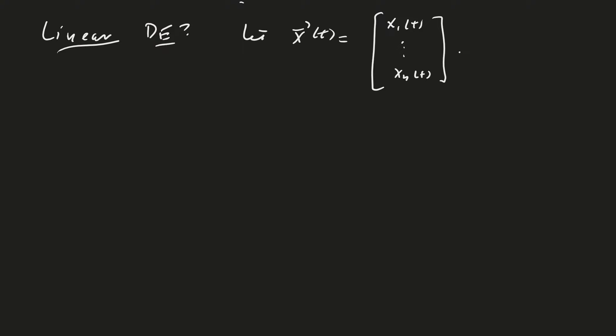Let x of t be equal to a parametric set of vectors. Then the operator acting on this vector, if that function is linear, the differential operator, then we would say that the differential equation is linear.